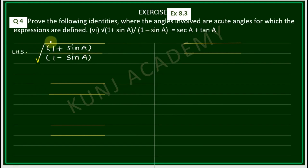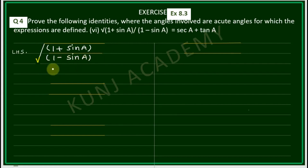The denominator is (1 - sinA), therefore we will multiply the numerator and denominator by its conjugate, (1 + sinA). Multiplying numerator and denominator by (1 + sinA).